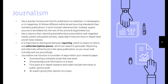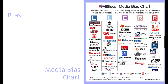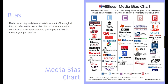I would recommend that if you're going to use an opinion piece, you double check the person's credentials — are they truly an expert in what they're talking about? Media outlets typically have a certain amount of ideological bias, and you can refer to a media bias chart put out by AllSides, a research organization. These reflect political leanings, with left being liberal and right being conservative. You have to decide what makes sense for your topic and how you balance your perspective. Keep in mind that reporting and opinion may have different levels of bias even within the same publication.